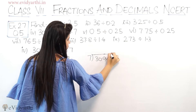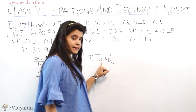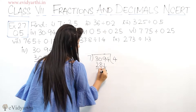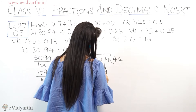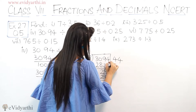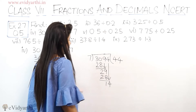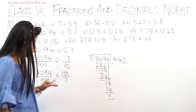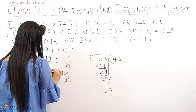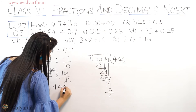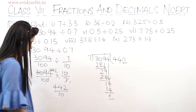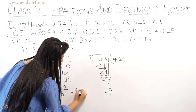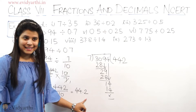3094 divided by 7: 7 के division में 3 नहीं आएगा, 30 में — 7 times 4 is 28. यहाँ पर आया 4 remainder 2. लाओ 9: 29 में 7 times 4 is 28, आया 4 remainder 1. लाओ 4: 14 में 7 times 2 is 14, आया 2 remainder 0. So 3094 divided by 7 is 442. नीचे 10 है, so 442 upon 10 equals 44.2. Decimal के बाद 1 digit आ रही है. Fine.